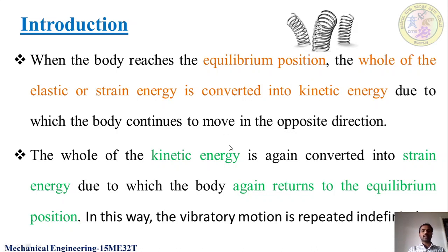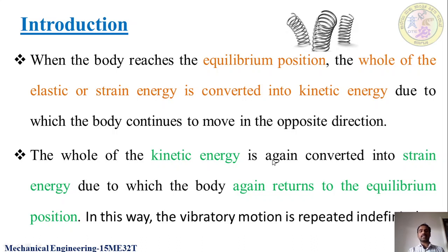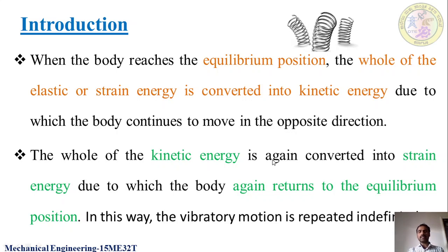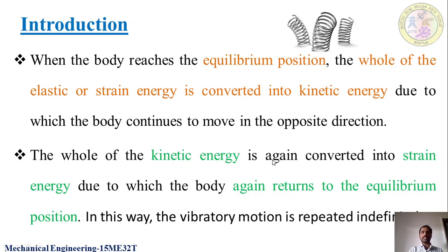The whole kinetic energy gained by the body will again be converted into strain energy, due to which the body again returns to the equilibrium position. Once the body comes back into the equilibrium position, it will again move - this process will be repeated. Such a motion is said to be vibratory motion.